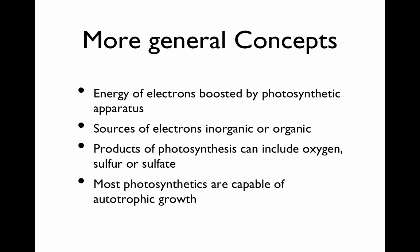The source of electrons can be inorganic or organic in microorganisms. The products of photosynthesis can include oxygen, sulfur, or sulfate. Most photosynthetics are capable of autotrophic growth.